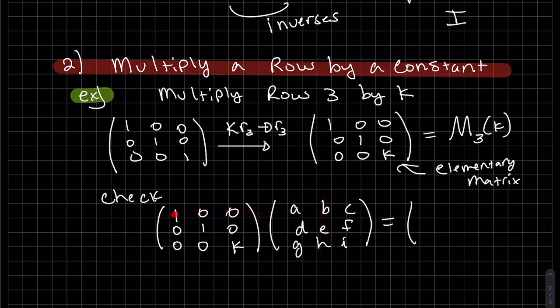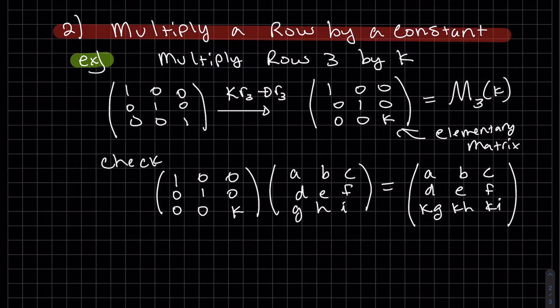Second row, D, E, F. Third row, K times G, K times H, and K times I. So it multiplies the third row. You can see this multiplies the third row by K. Okay, our inverse.